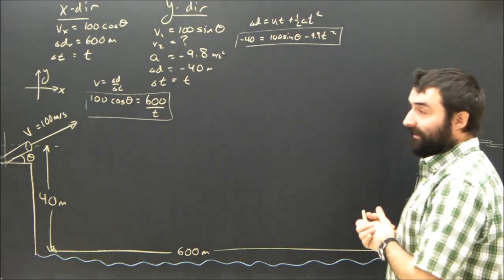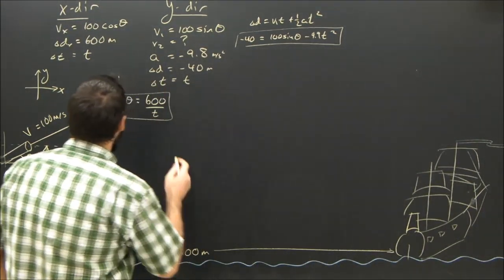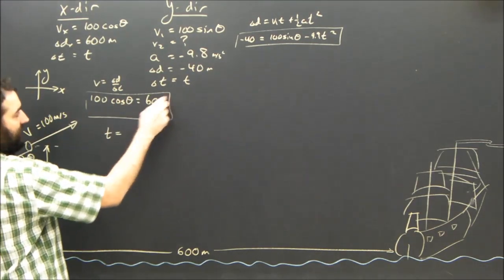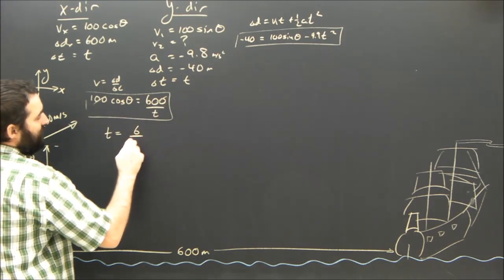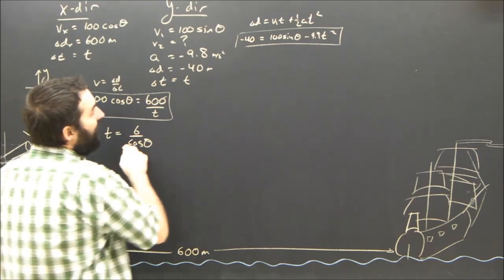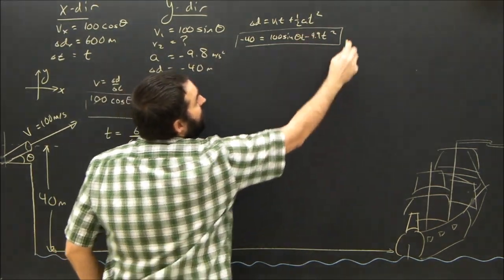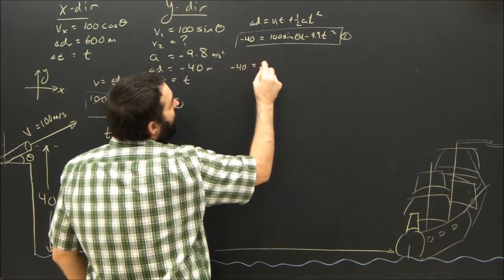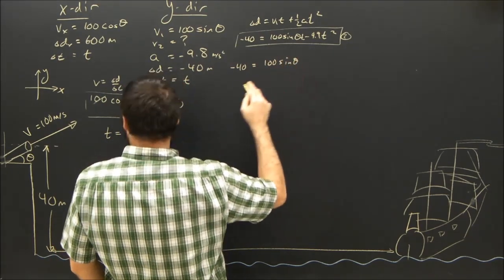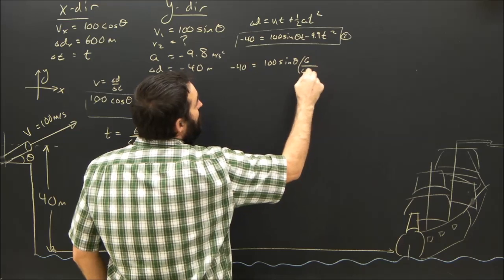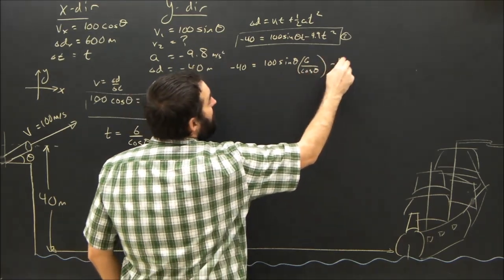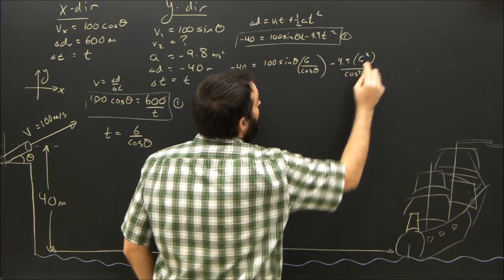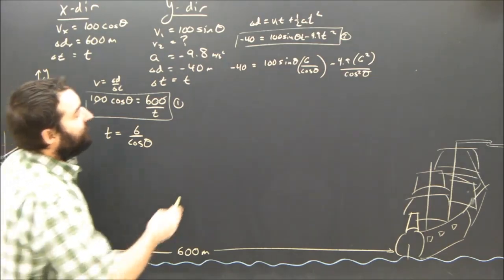Okay, so what do we do? Well, just like always, we're going to substitute one end for the other. So I think this time I'm going to rearrange this equation for time. And I'm going to see that this goes away, it becomes 6. So it's 6 over the cosine of theta. And I'm going to shove that into equation number 2 here, I guess, as you call it. Okay, sum in 1 into 2, I will get negative 40 equals 100 sine theta times 6 over cos theta minus 4.9 times 6 squared over cos squared theta.